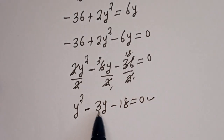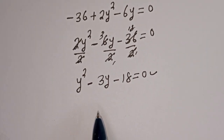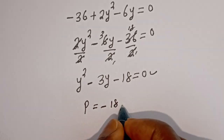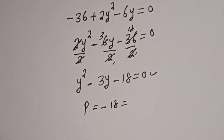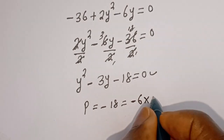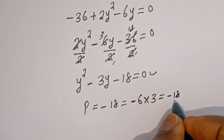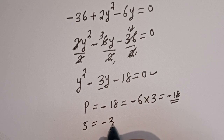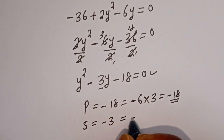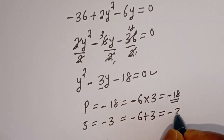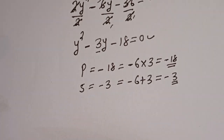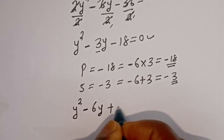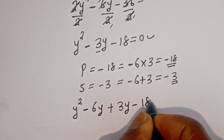This is a quadratic equation. Let's solve this using the factorization method. From the factorization method, the product is minus 18, which equals minus 6 multiplied by 3, giving minus 18. And the sum, which must equal the middle coefficient minus 3, is minus 6 plus 3, which equals minus 3. Now let's substitute: y squared minus 6y plus 3y minus 18 is equal to 0.